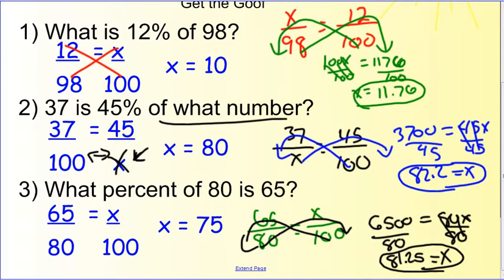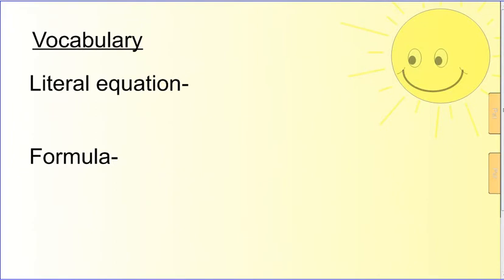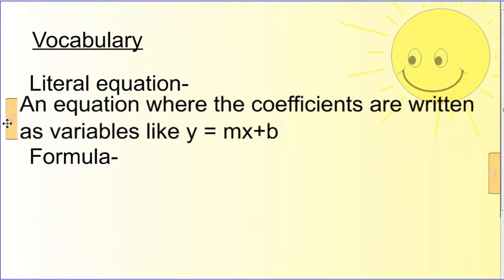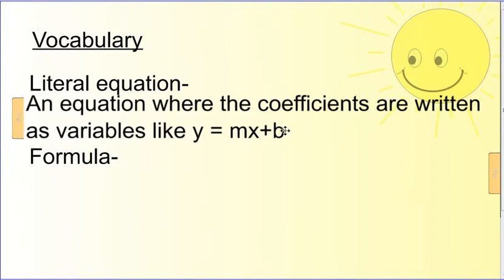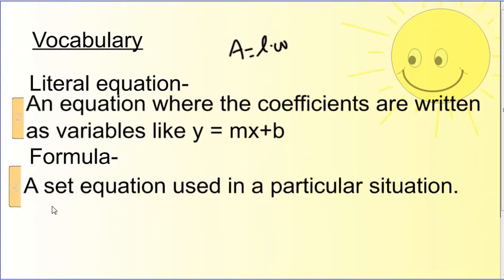Today we're looking at rewriting equations and formulas. A literal equation is an equation where the coefficients are written as variables — you'll notice how there's no numbers, though sometimes there are. For example, y equals mx plus b is called slope-intercept form, which we'll learn about later. A formula — like the formula for finding the area of a rectangle — is a set equation used in a particular situation. It's set in stone; that's what you use every single time.